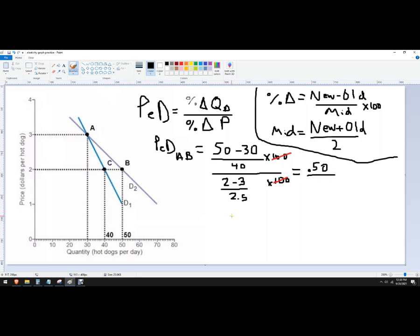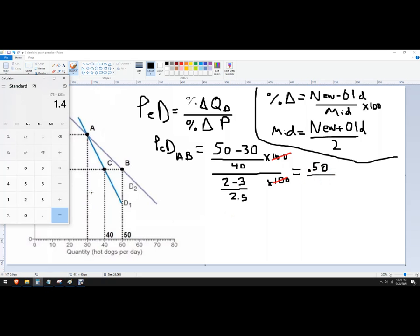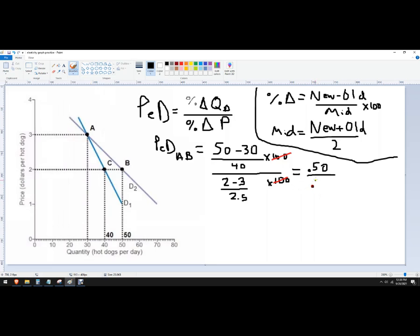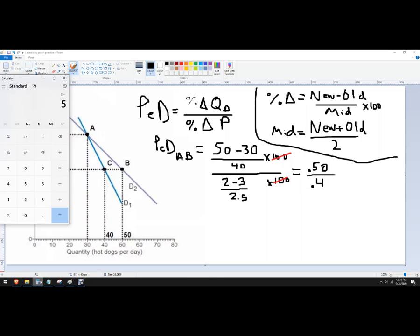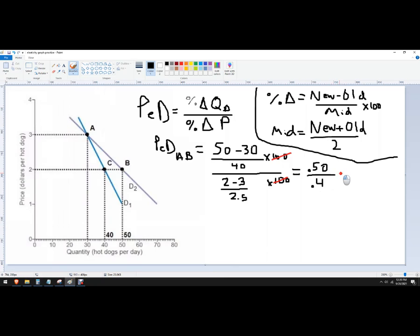And then this is one over two and a half. So one over 2.5, which is 0.4. So you just get 0.5 over 0.4, or you could just say five over four, which is just 1.25.